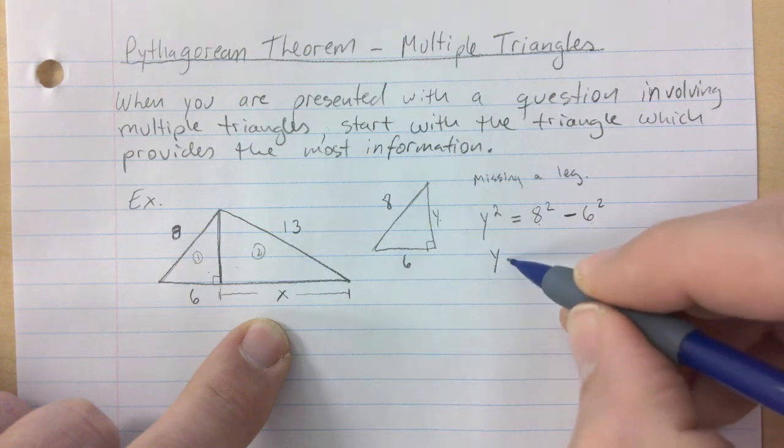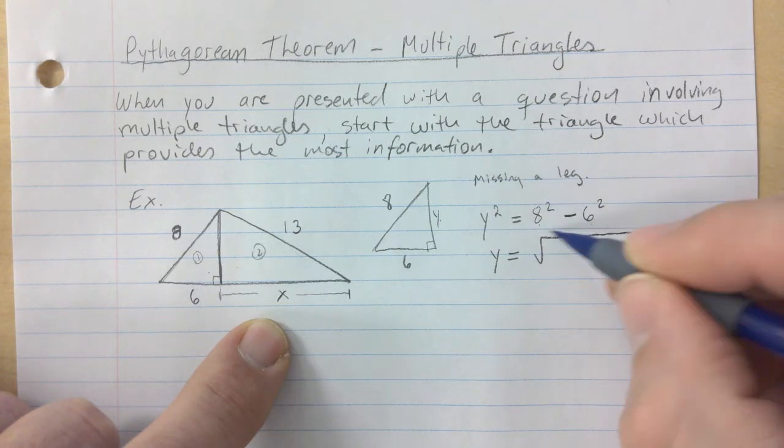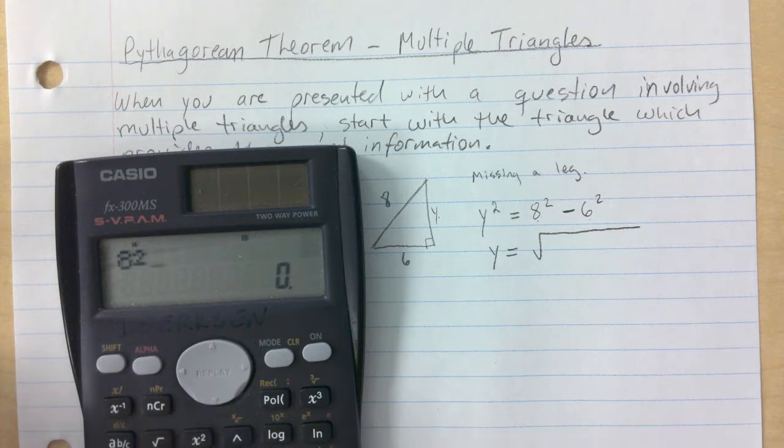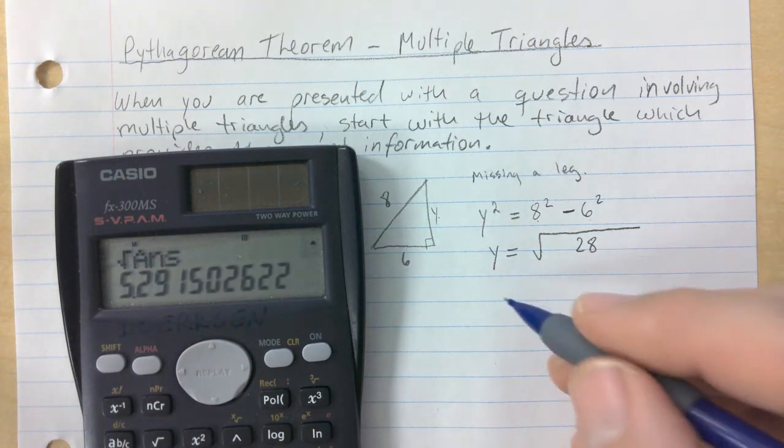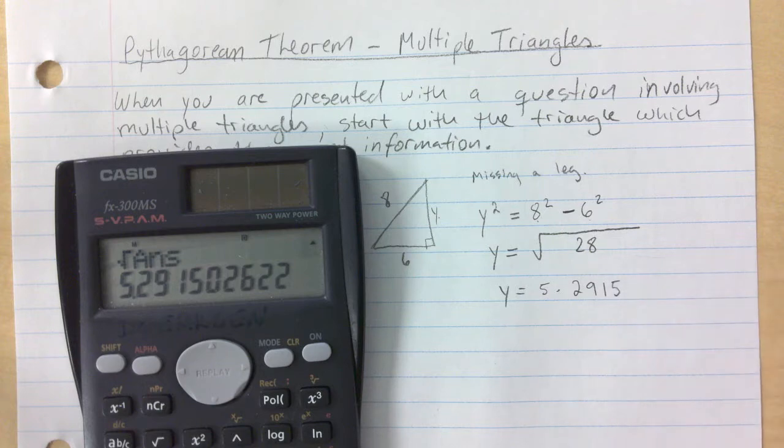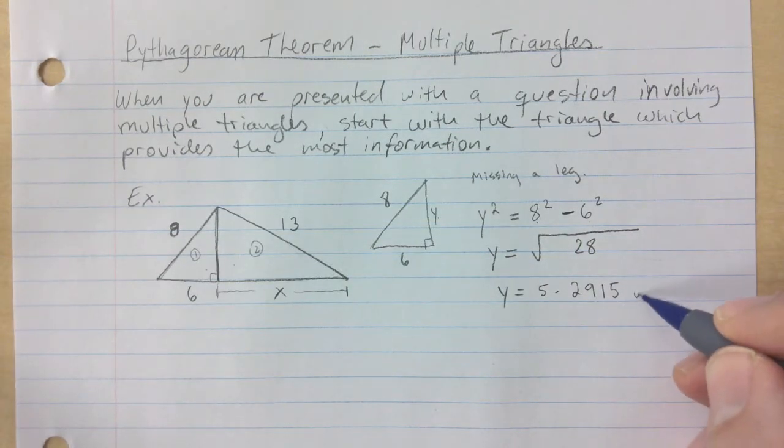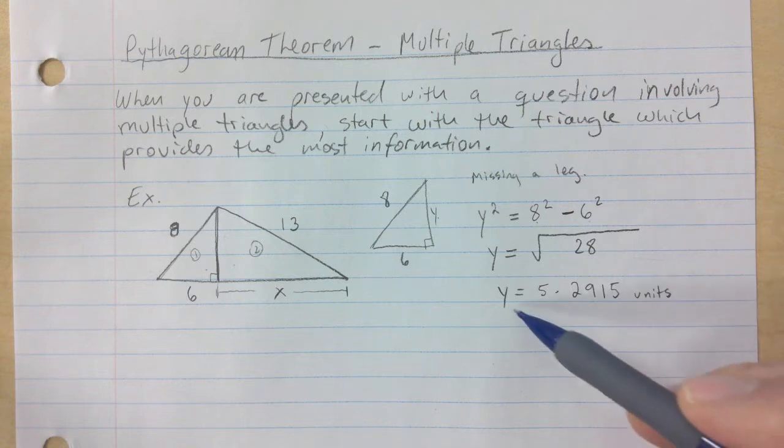When you're missing a leg you take that one, you square it, and then it's eight squared minus six squared. You got to make sure you subtract from the hypotenuse to subtract that other leg from the hypotenuse. Then you go Y is equal to, you will square root, write that down first. Mr. Dirksen, why are you using four decimals? Because I'm not done yet.